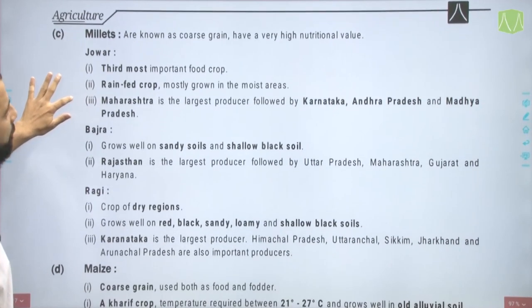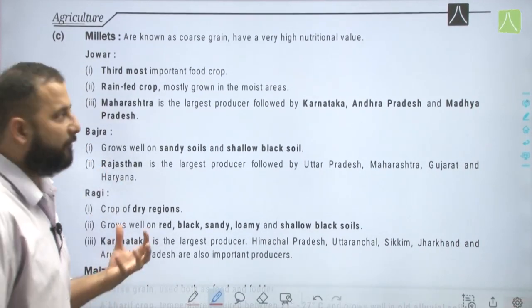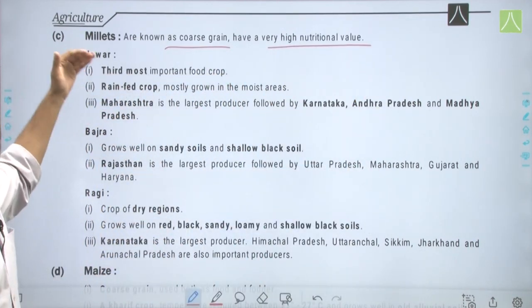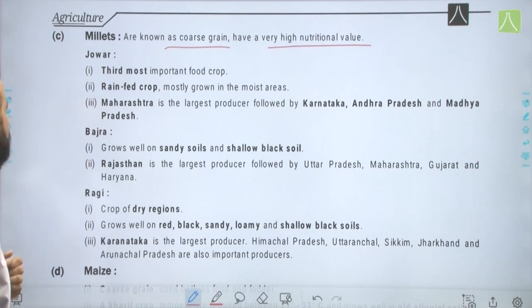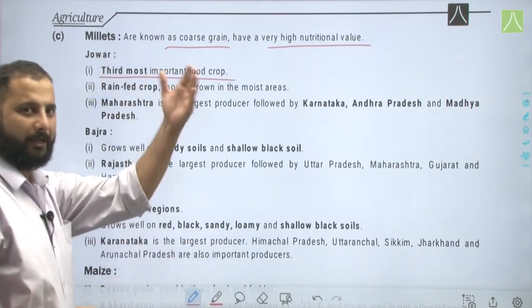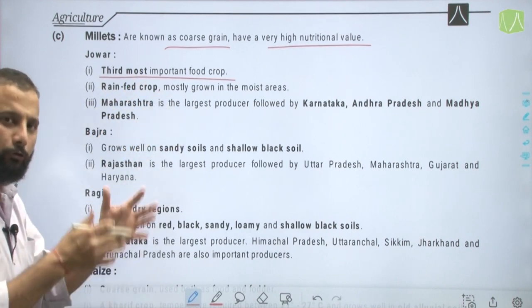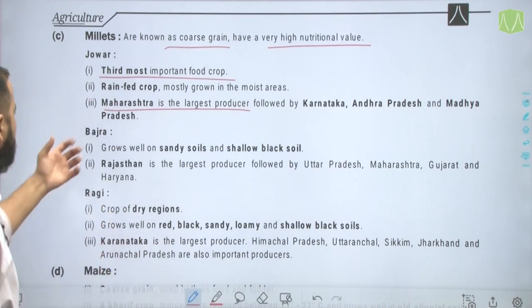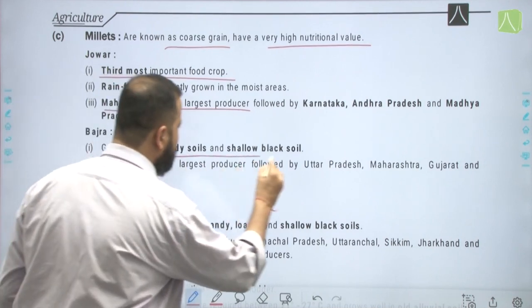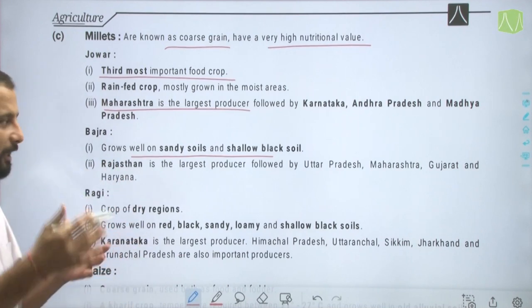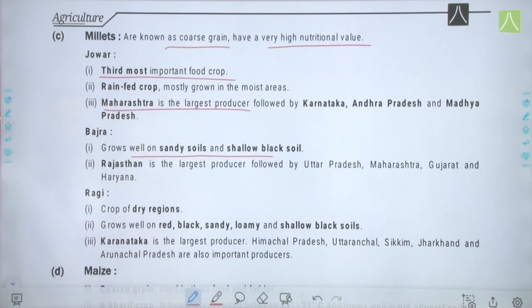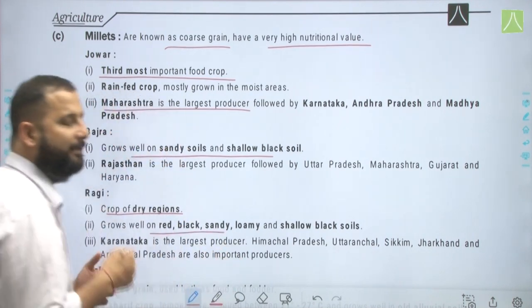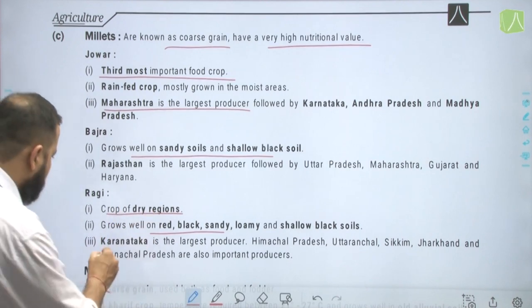Next are millets, known as coarse grains that provide roughage and have high nutritional value. Among them are Jowar, Bajra, and Ragi. Jowar is the third most important food crop after rice and wheat; it is a rain-fed crop mostly grown in moist areas — Maharashtra is the largest producer, followed by Karnataka, Andhra Pradesh, and Madhya Pradesh. Bajra grows well on sandy soils and shallow black soil — Rajasthan is the largest producer. Ragi is a crop of dry regions, grows well on red, black, sandy, loamy soils, and Karnataka is the largest producer.